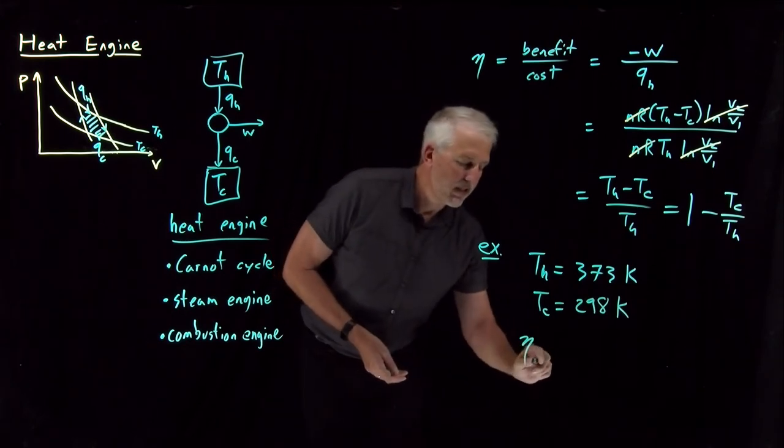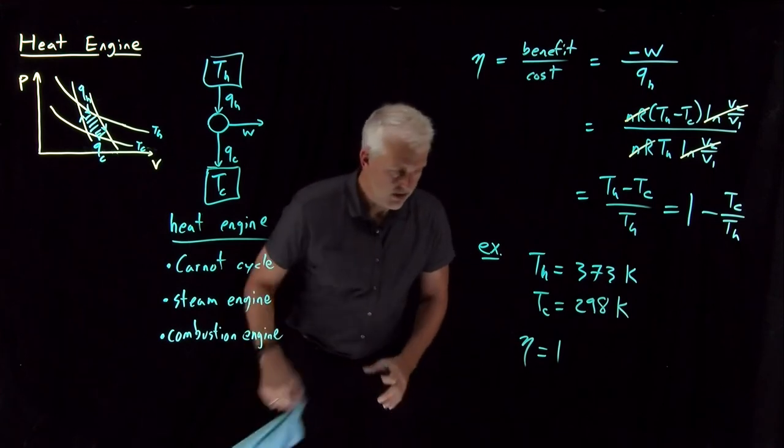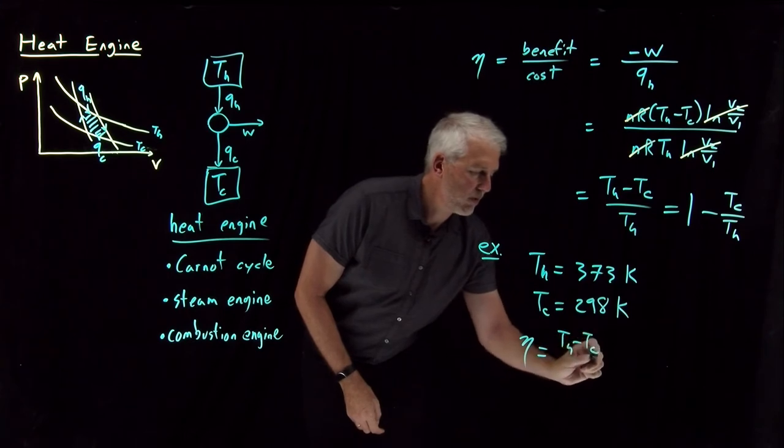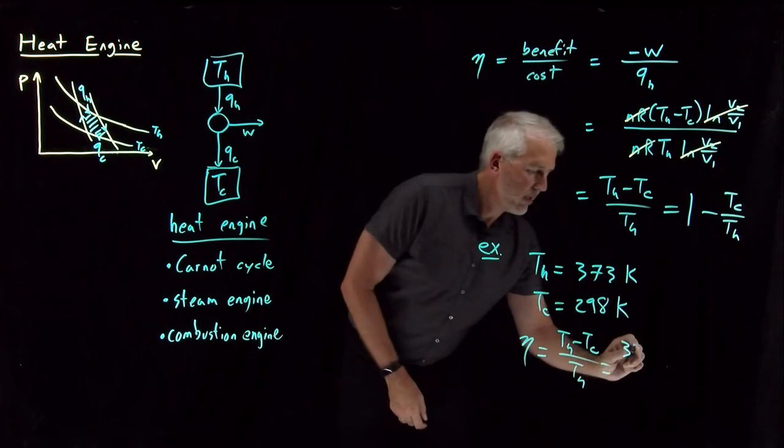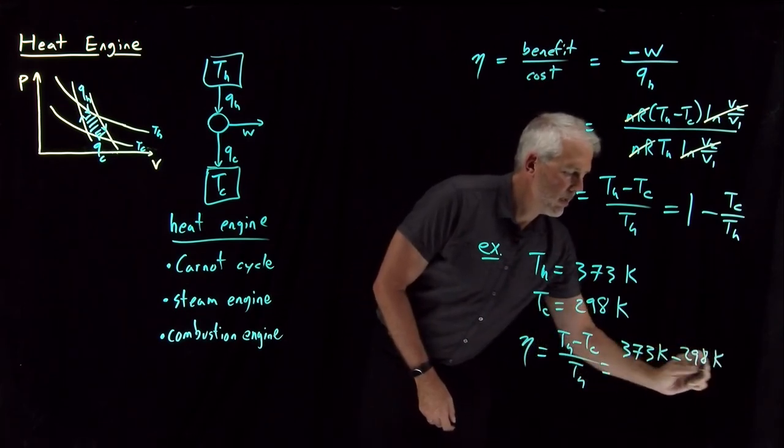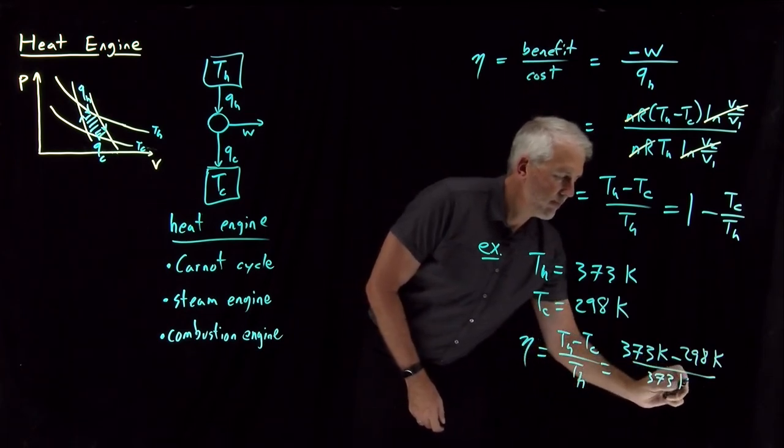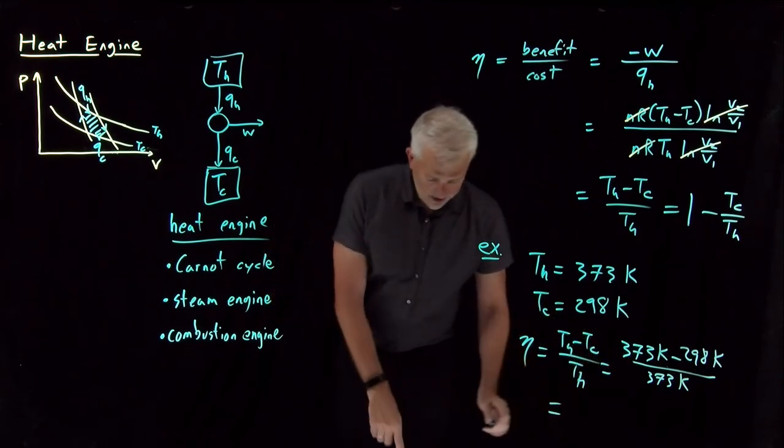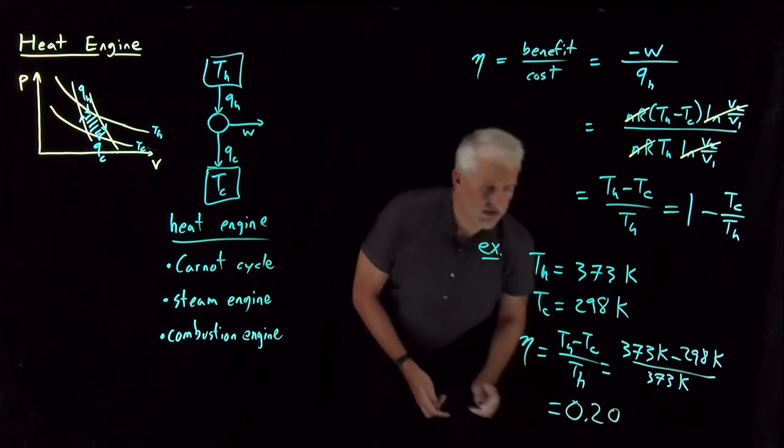The efficiency, let's do it instead as using this form, T hot minus T cold over T hot, or 373 minus 298 over T hot. So 75 Kelvin in the numerator divided by 373, that works out to be 0.20.